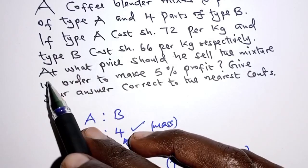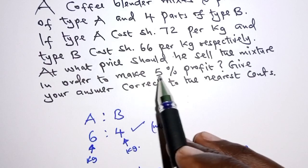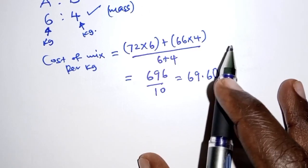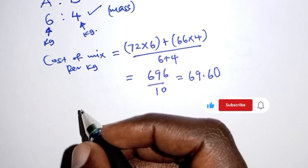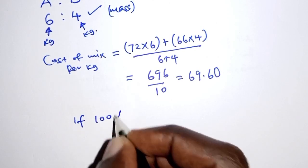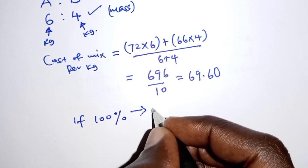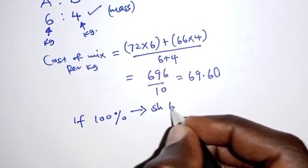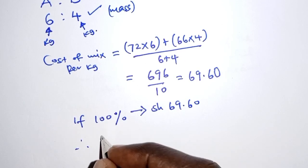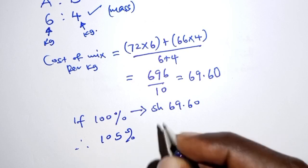Now remember, the question is at what price should we sell the mixture in order to make 5% profit. Here we have the cost price, but in order to make the profit: if 100 percent (the cost price) is represented by 69 shillings and 60 cents, how about 105 percent, that is if we make a profit of 5 percent?